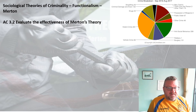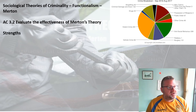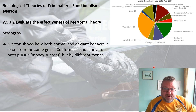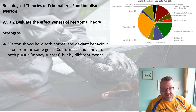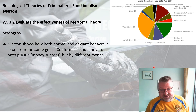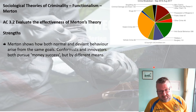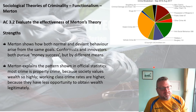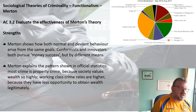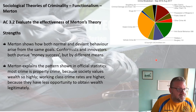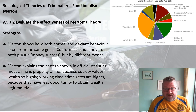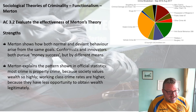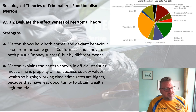Let's evaluate Merton, starting with the strengths. He shows how both normal and deviant behaviour arises from the same goals — conformists and innovators both pursue money and success, but by different means: one legal, another illegal. Merton also explains the pattern shown in official crime statistics: most crime tends to be property crime because society values wealth so highly, and working class crime rates are higher because they have less opportunity to obtain wealth legitimately.